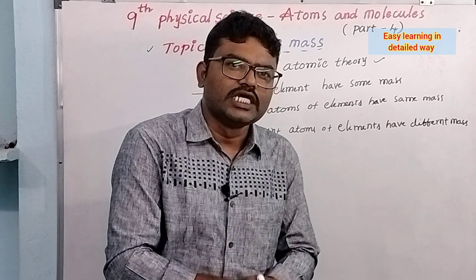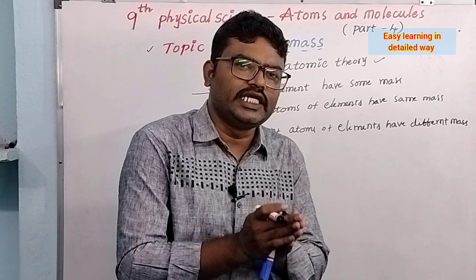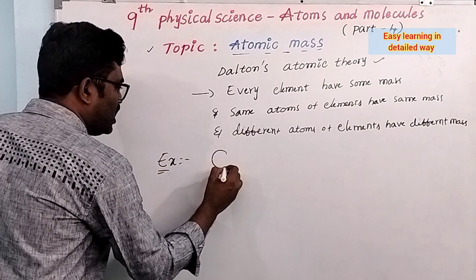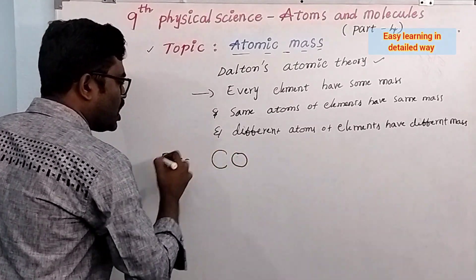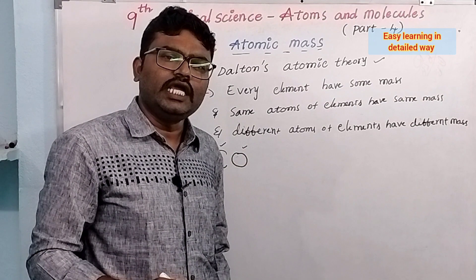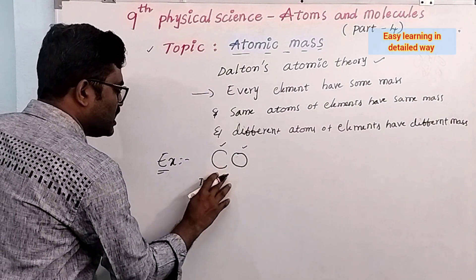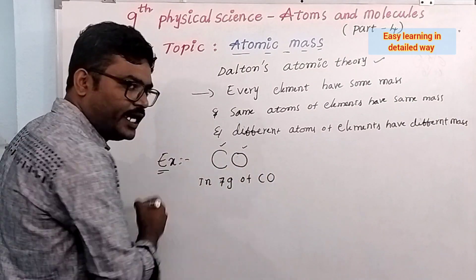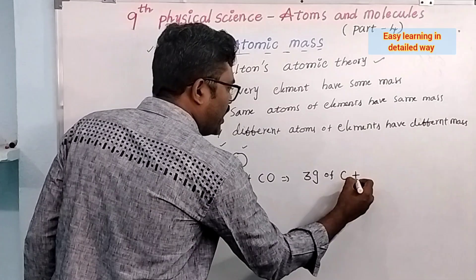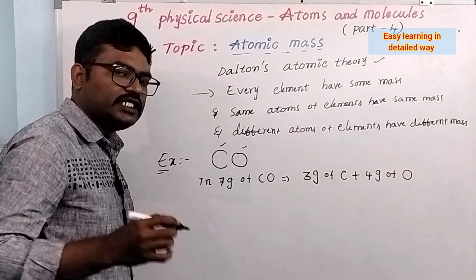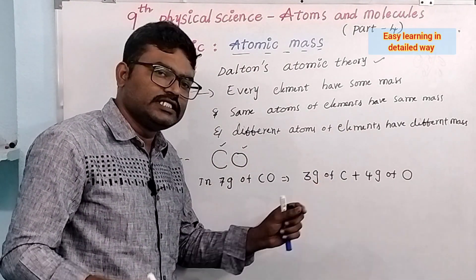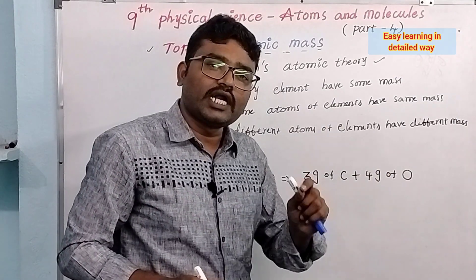The law of constant proportion states that in a chemical compound, elements are combined in definite proportion by their mass. For example, let's see carbon monoxide — a chemical compound. In carbon monoxide, you have carbon atoms and oxygen atoms. In 7 grams of carbon monoxide, scientists find experimentally that there are 3 grams of carbon and 4 grams of oxygen.